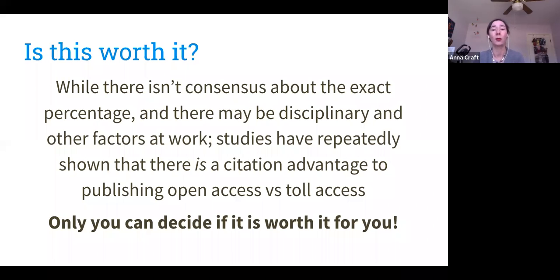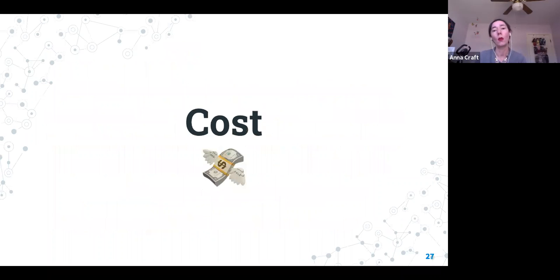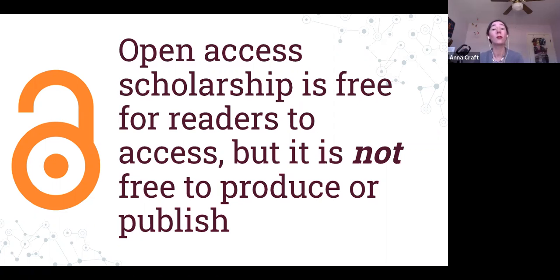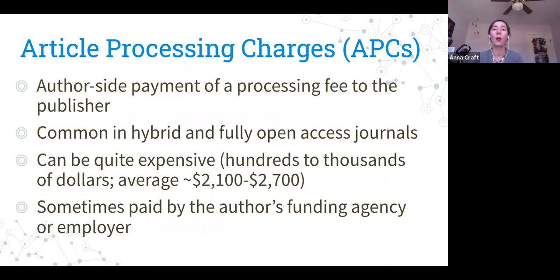Cost is something that keeps people from publishing open access. Open access is free for readers, but it still has costs — the time of peer reviewers and the systems involved in publishing. Article processing charges, or APCs, are how many open access journals fund themselves. Instead of institutions subscribing, authors pay APCs — a processing fee to the publisher. This is very common in hybrid and fully open access journals.